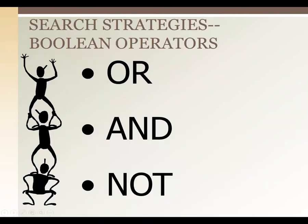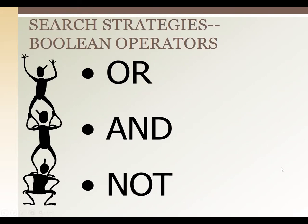In constructing searches, one way to get fewer and better results is to add keywords using Boolean operators: OR, AND, and NOT. Using OR in a database search means you're searching for multiple keywords equally. For example, if you search for 'dog OR canine OR hound,' the results will contain articles that mention any of those terms — so results may contain only 'dog,' only 'canine,' or only 'hound.'